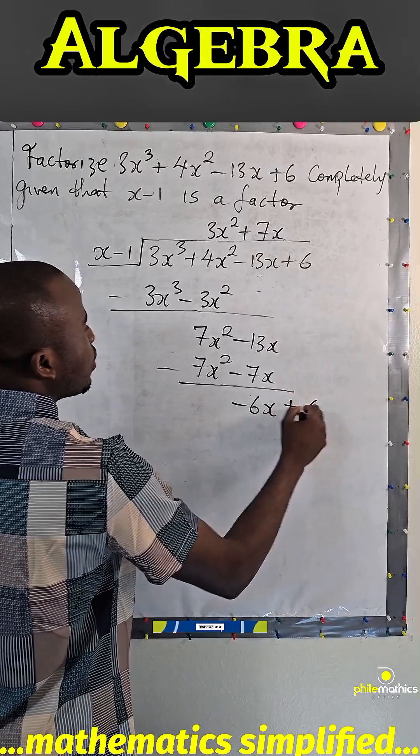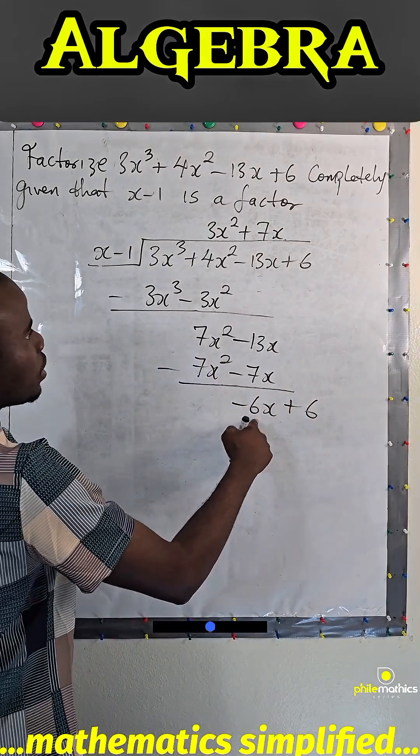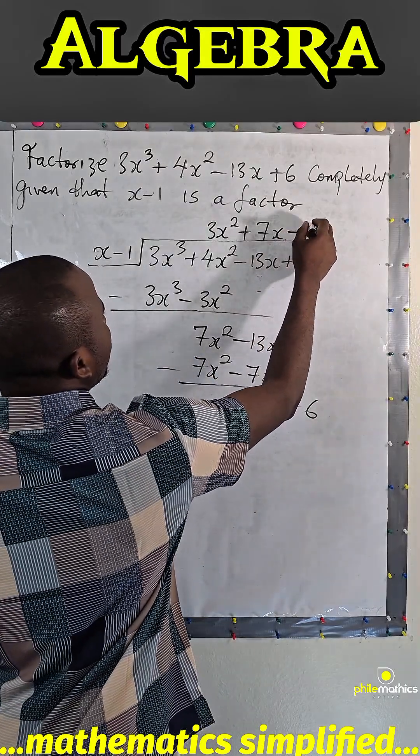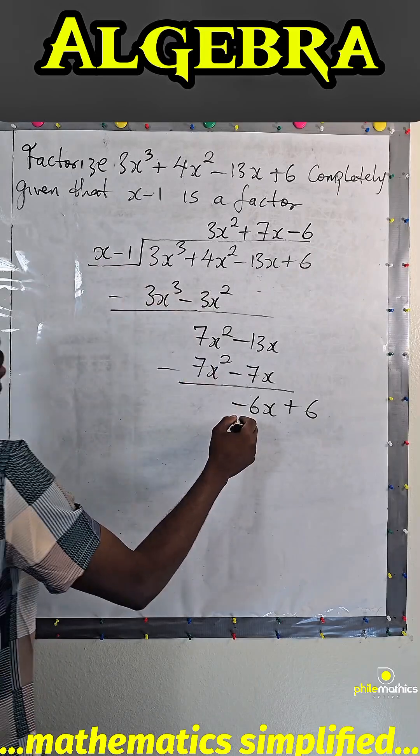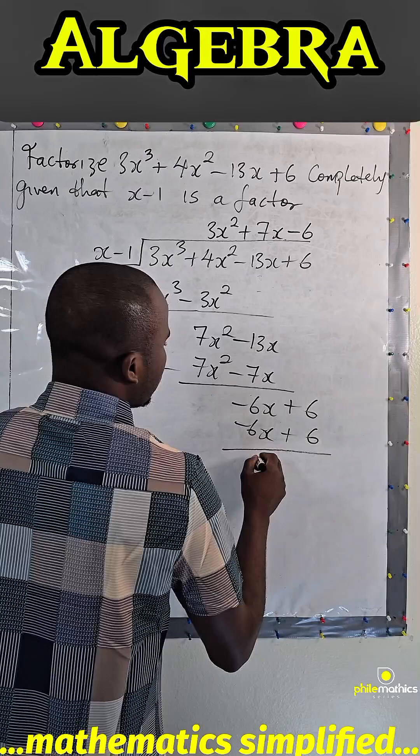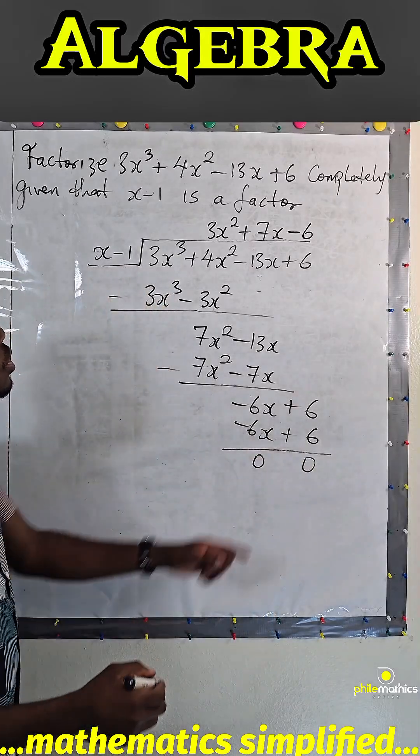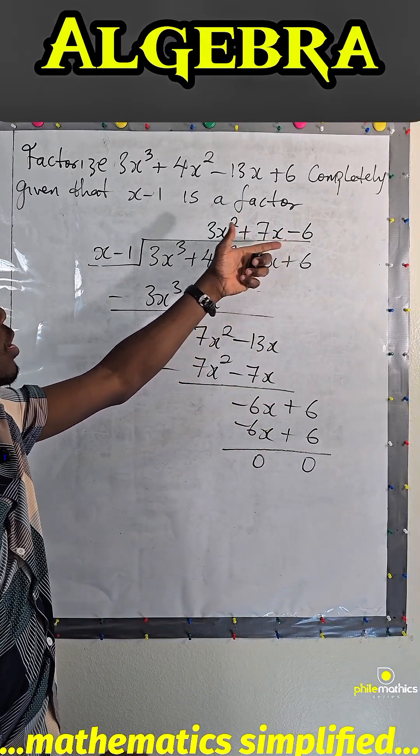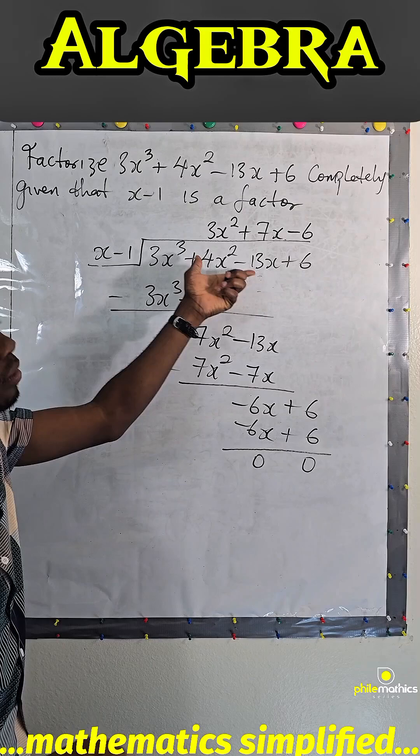We bring this down, plus 6. X into minus 6x is minus 6. Minus 6 times minus 1 is plus 6. We subtract, this will be 0, 0. It means this is the quotient when we divide this dividend by this.